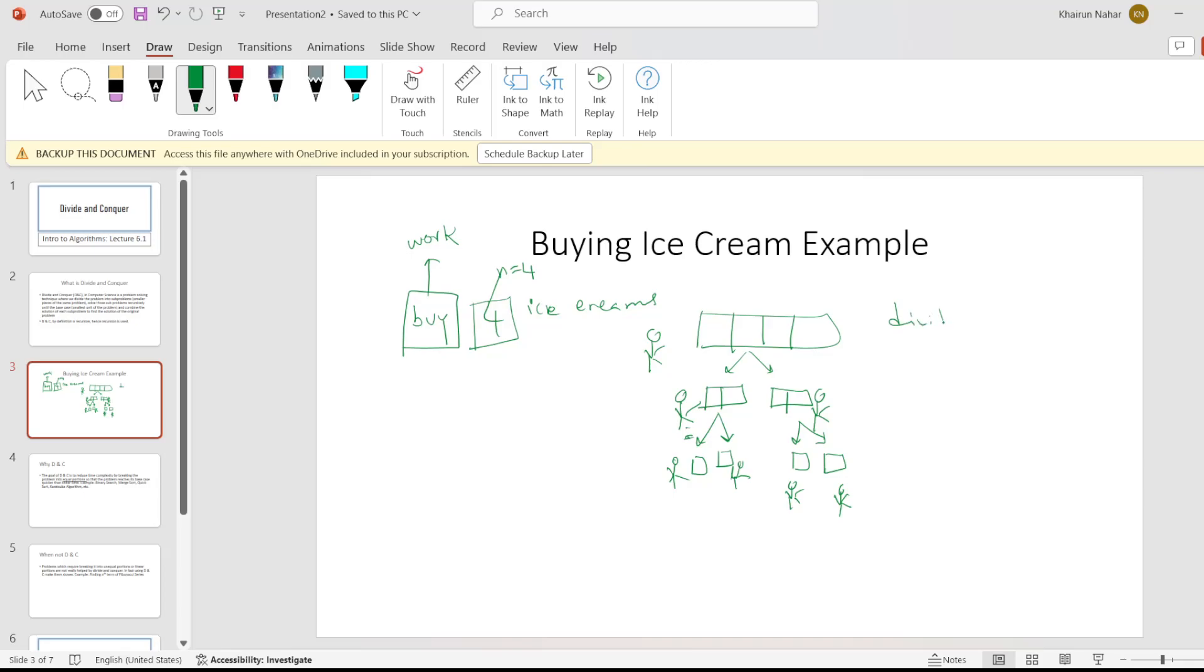So we divided the work into two pieces. So this is the first thing to notice. The second thing to notice is at every step, every person is doing the same thing or doing the same work, which is buy.